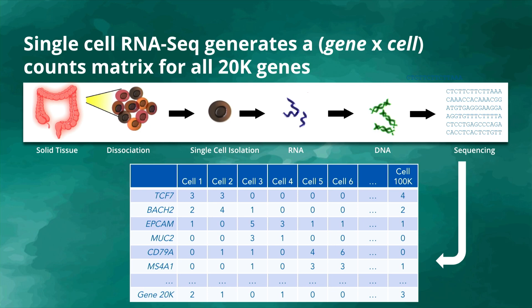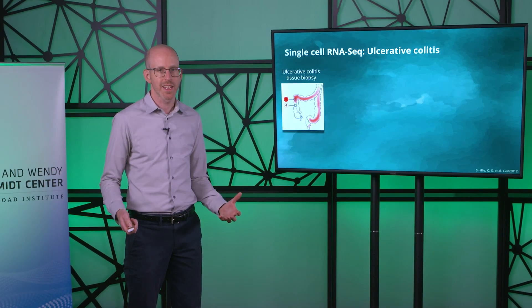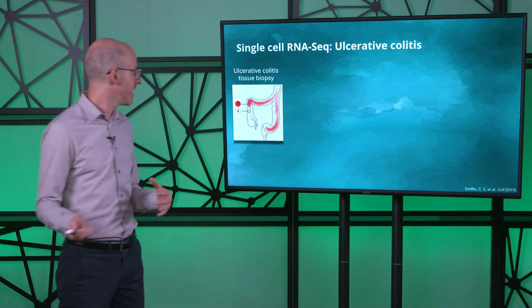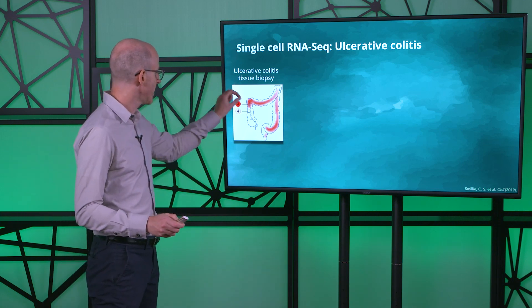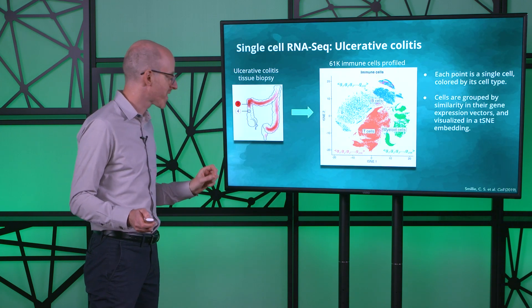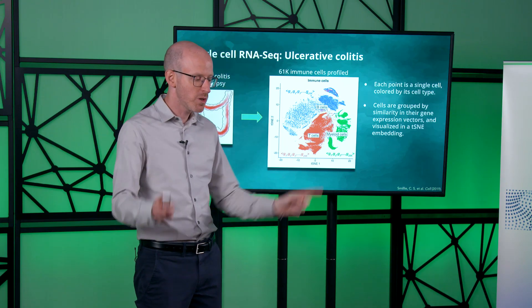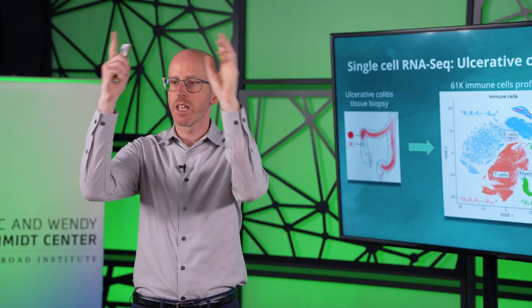Let me give you an example of single-cell transcriptomics applied to ulcerative colitis. This is a study performed by Dr. Romnick Xavier, one of the organizers of this challenge at Mass General Hospital and the Broad Institute. The Xavier group took patients with ulcerative colitis, took tissue biopsies, and prepared each of those biopsies for single-cell transcriptomics. Every single cell from this ulcerative colitis sample has 20,000 genes measured — so every single cell is a vector of 20,000 measurements. Here we're showing these cells projected into a low-dimensional embedding called t-SNE, a nonlinear dimensionality reduction technique. If two cells have similar gene expression in the high-dimensional space, they will be close to one another in the t-SNE embedding.